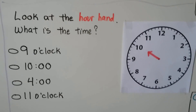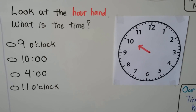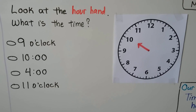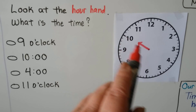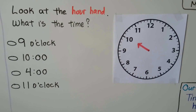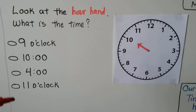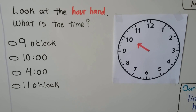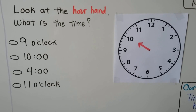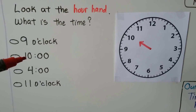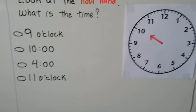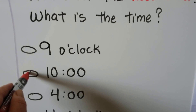Look at this hour hand — what time is it showing? The hour hand is pointing to the ten. Which one of these would be the correct answer? If you said ten o'clock, you're right. It's pointing to the ten, so we would fill in this one.